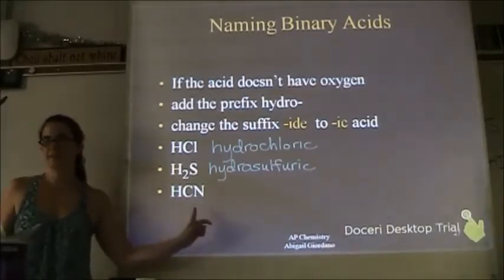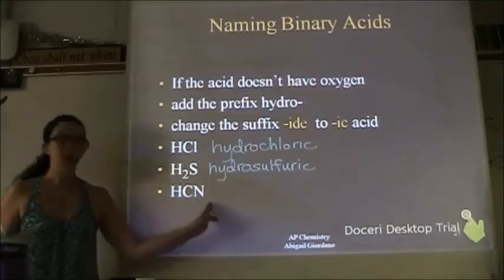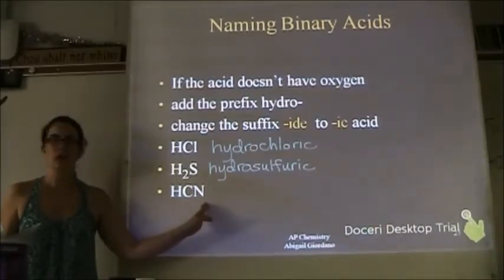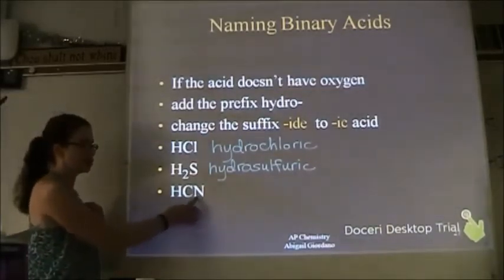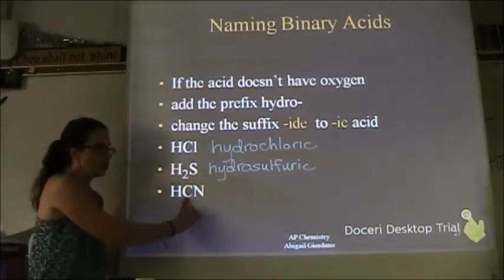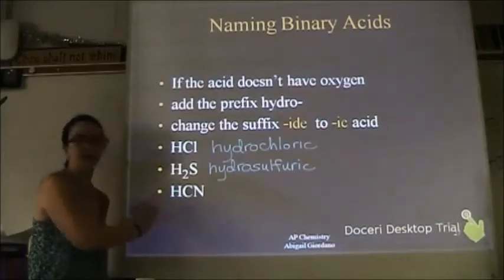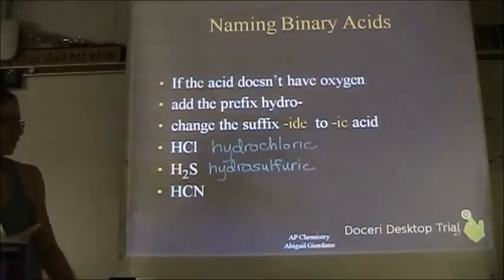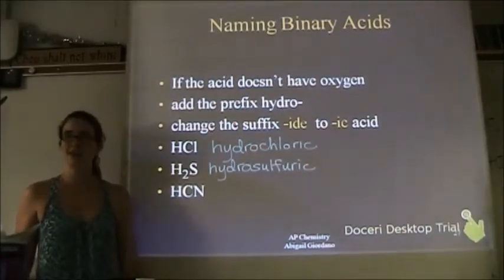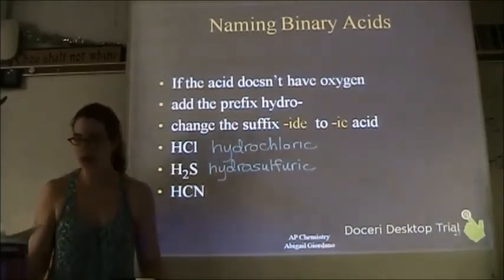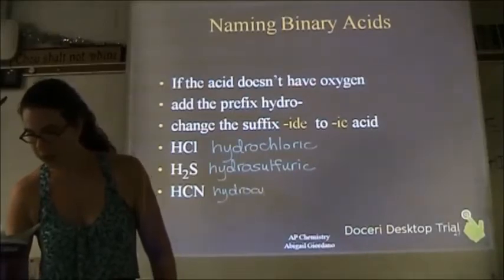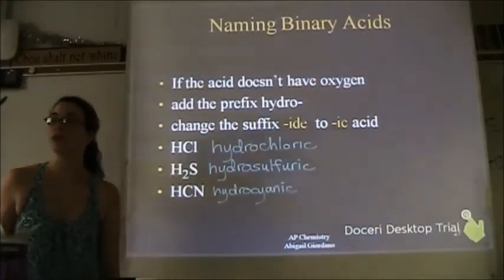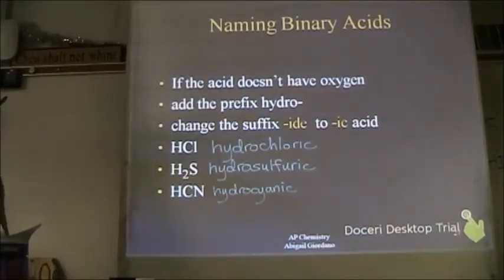This next one is a little different. Do you see oxygen in there? No. So it's not an oxy acid. What might be throwing you off is it's not just one single element. That polyatomic ion is cyanide. Anyone want to take a guess? Hydrocyanic acid — yes. It's treated as a binary acid because it does not have oxygen, so we use those rules.